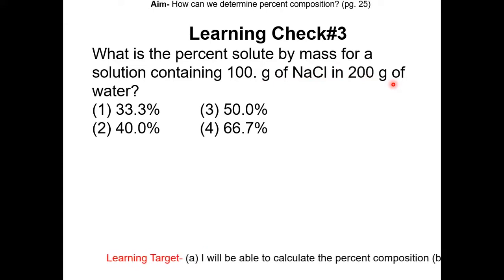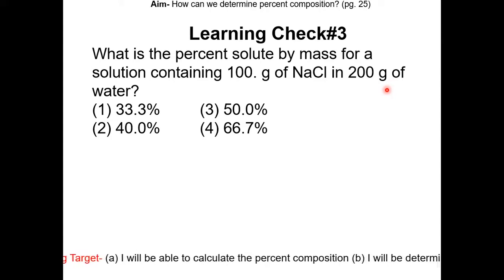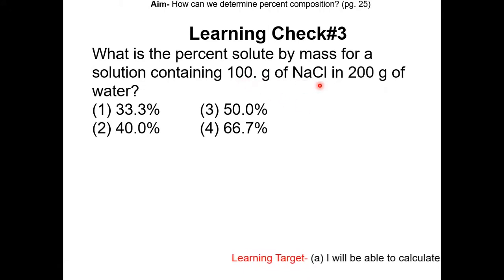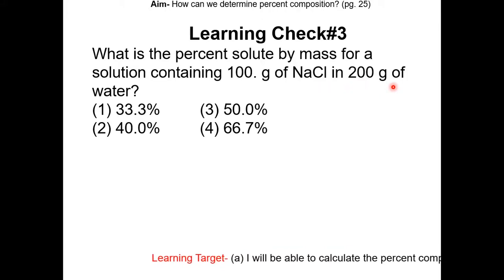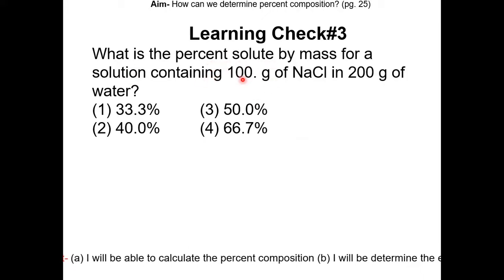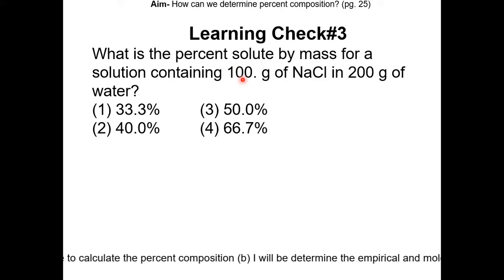The first step is to figure out the mass of whole. The mass of whole will be the mass of solute plus the mass of the solvent. The mass of solute is 100 grams of NaCl. The mass of solvent is 200 grams of water, so the sum will be 300 grams — that is the mass of the solution. The percent composition of the solute will be 100 grams over 300 grams times 100%, which is 33%. Choice 1.